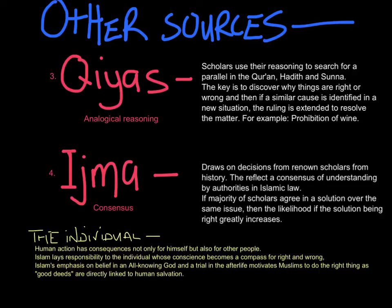The fourth source is Ijma, or consensus, which draws on decisions from renowned scholars from history. They reflect a consensus of understanding by authorities in Islamic law. If a majority of scholars agree on the same issue, then the likelihood of the solution being right greatly increases — if scholars repeatedly come to the same conclusion that something is right or wrong, that becomes enforced as the right action. The individual, as mentioned, is extremely important — the human being is the most important component or agent in ethical decision making.